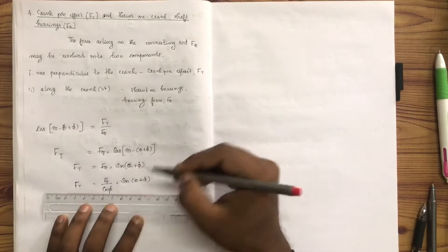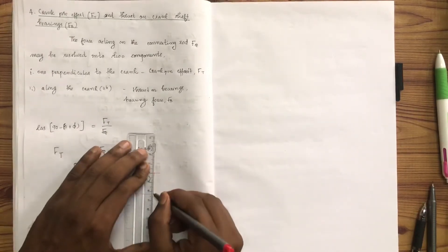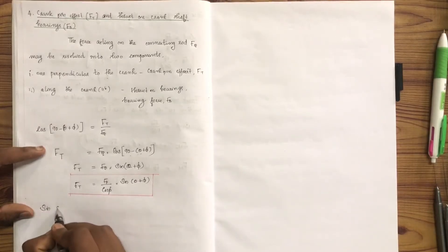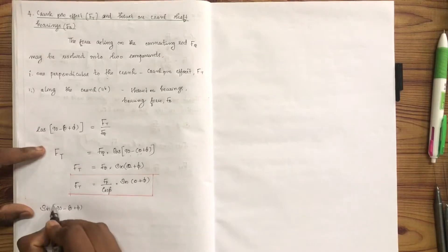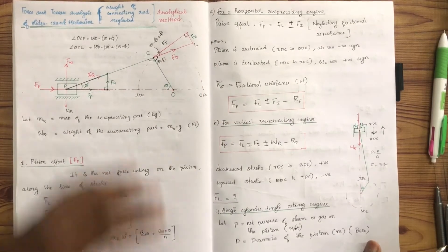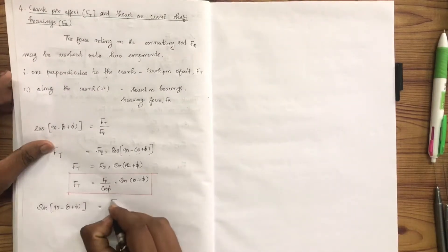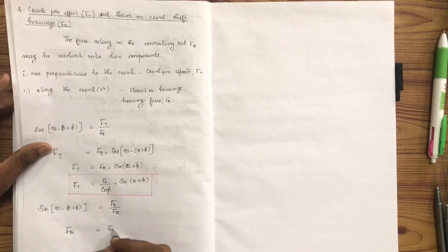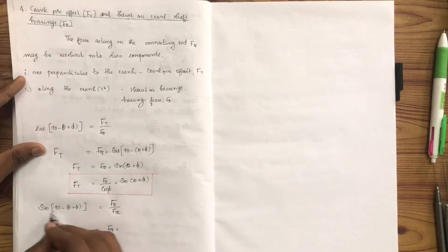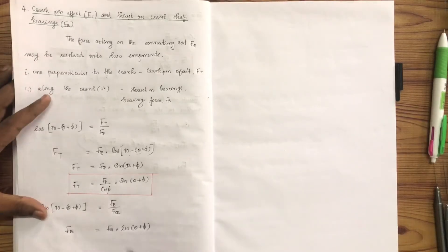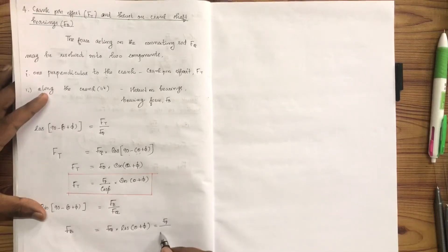Ft is equal to Fp into sin(θ + φ). This is the crank pin effort. To find FB — the thrust on the bearings — sin of angle (90 minus theta plus phi) gives opposite by hypotenuse, which is FB by FQ. Therefore FB equals FQ into cos(θ + φ).